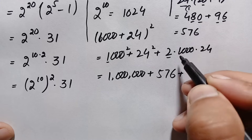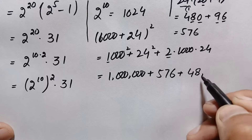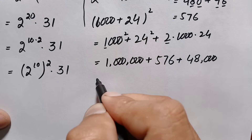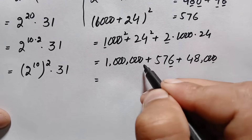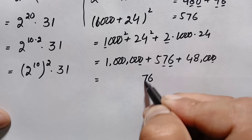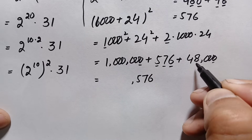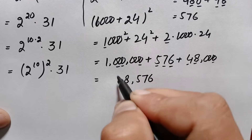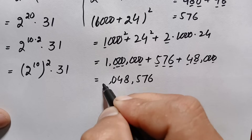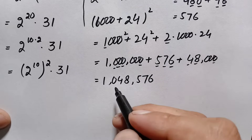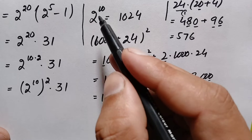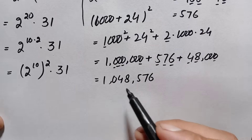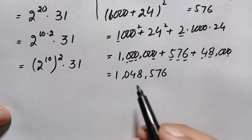The middle term 2 times 1000 times 24 equals 48,000. Now summing all three: 1,000,000 plus 576 plus 48,000. Adding digit by digit gives 1,048,576. So the value of 2 raised to power 20, which is the square of 1024, is 1,048,576.